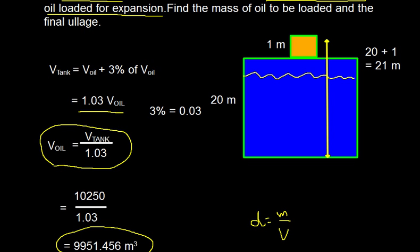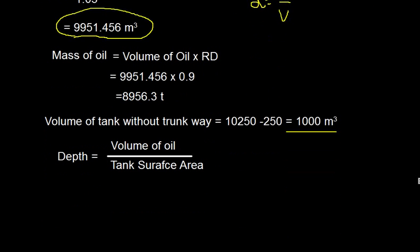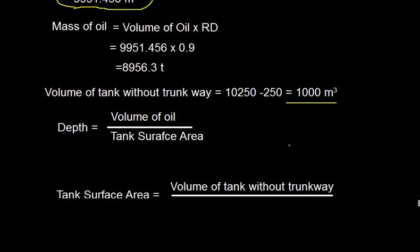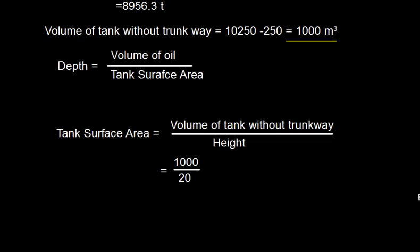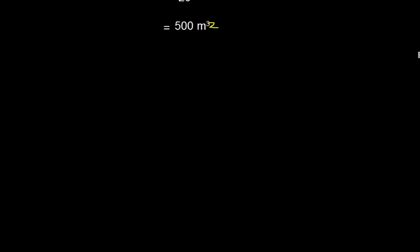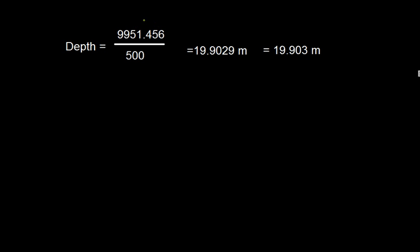The depth of oil = volume of oil divided by the tank surface area. The tank surface area is calculated from the volume without trunkway: 10000 cubic meters divided by the height of 20 meters gives 500 square meters. Therefore, depth of oil = 9951.456 divided by 500 = 19.903 meters.